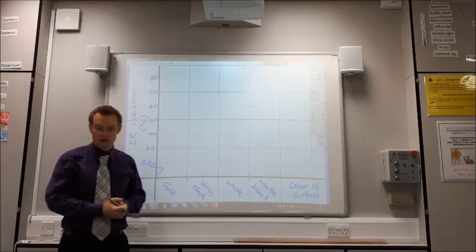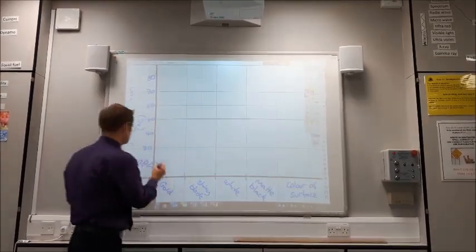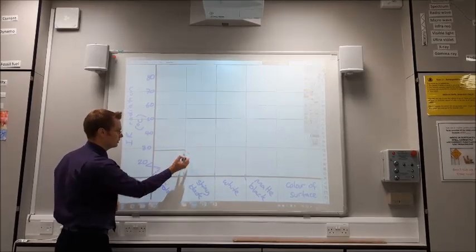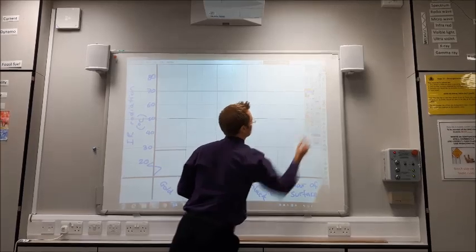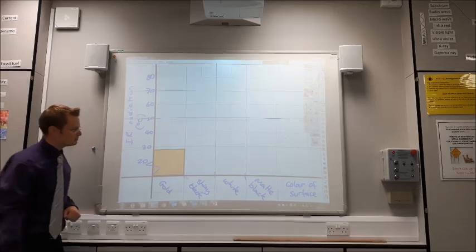So, next is drawing the bars. So, for gold, it was 28. So, that would be here. Whoa, that's not what I was expecting to happen. Ah, that's fine. So, there's my first bar. For shiny black, it was 76.5, which is there.